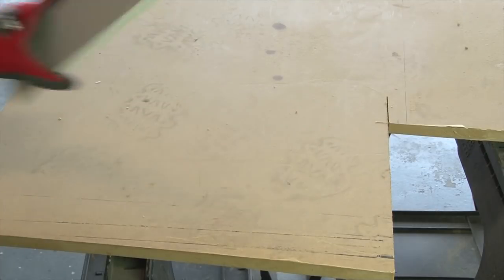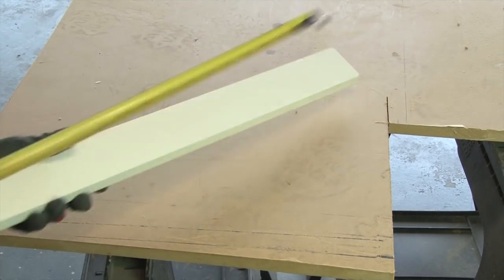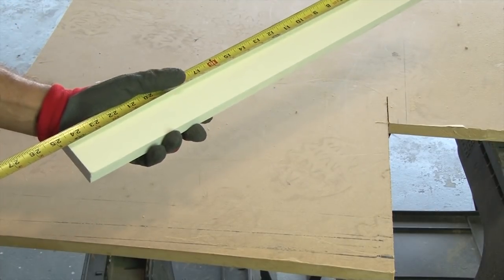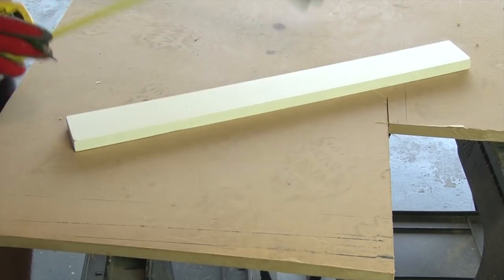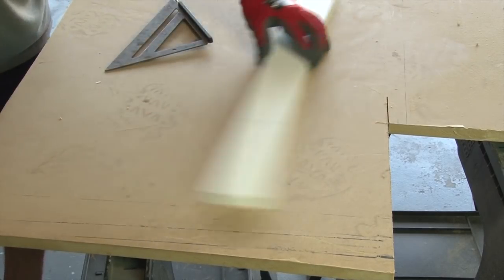Okay, now that the base has been cut out, it's time for your top support piece. I'm using a 1 by 3 inch piece of wood. This one is 24 inches long, and I'm going to measure and cut it down to size to 18 inches.